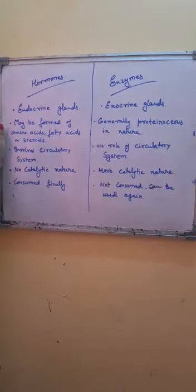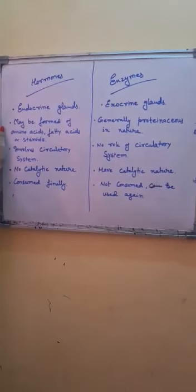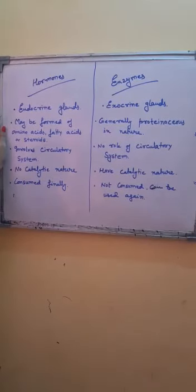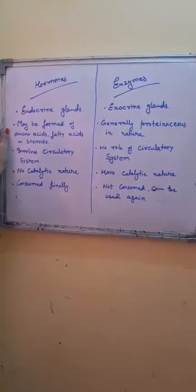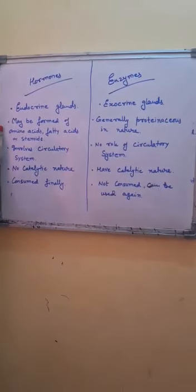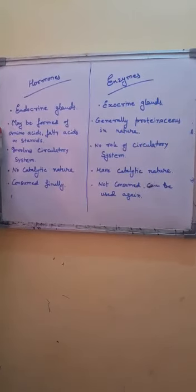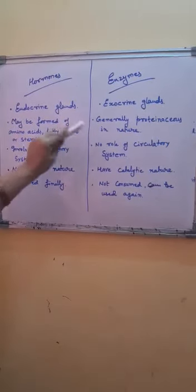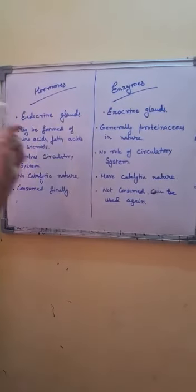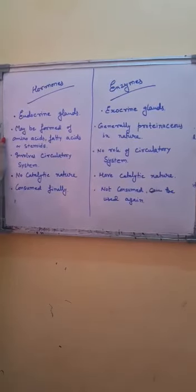The second difference: hormones may be of diverse chemical nature — they may be amino acids, peptides, proteinaceous, or made up of fatty acids or steroids. Whereas enzymes are generally proteinaceous in nature. So hormones are more diverse in their chemical composition than enzymes.